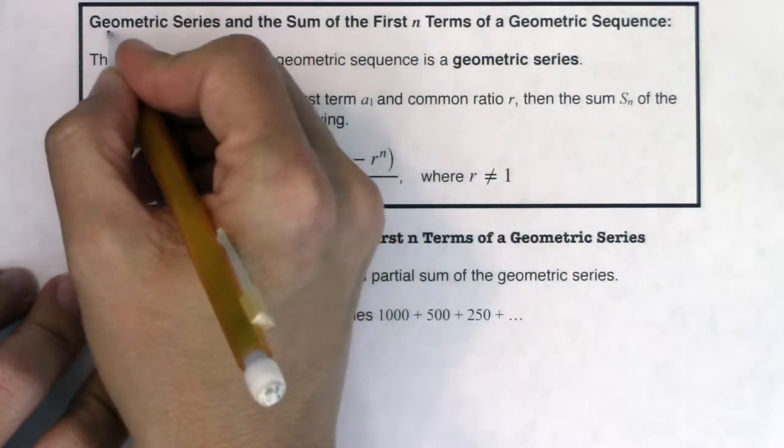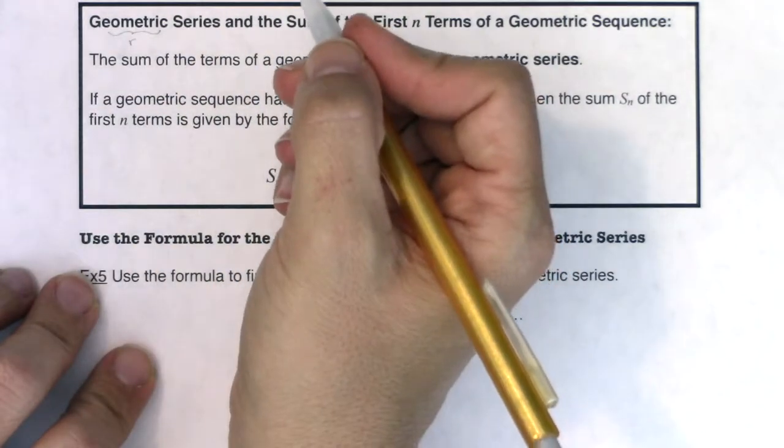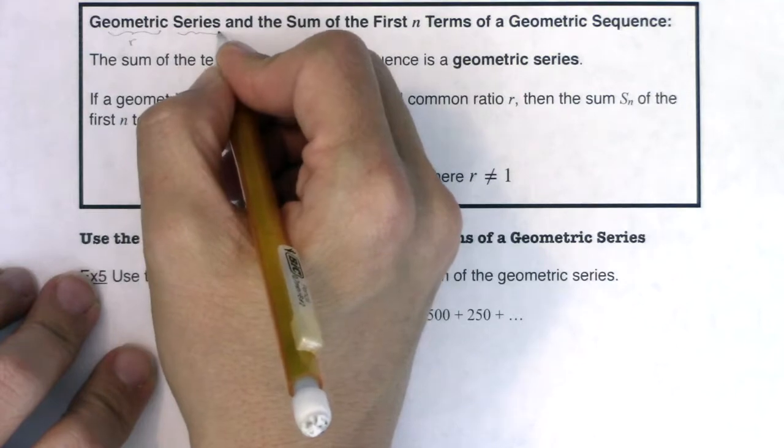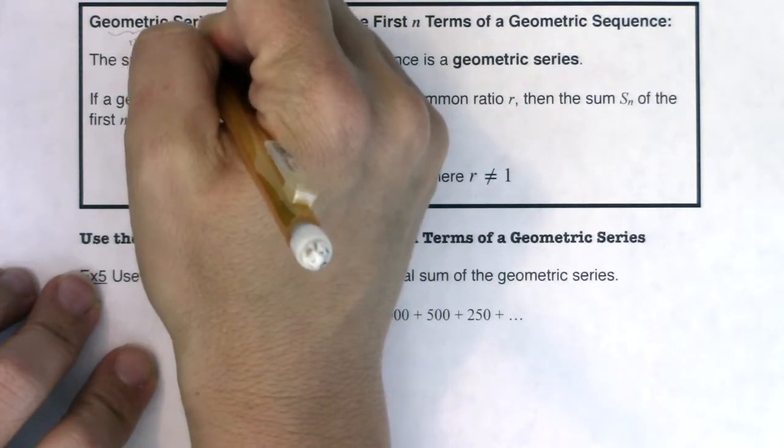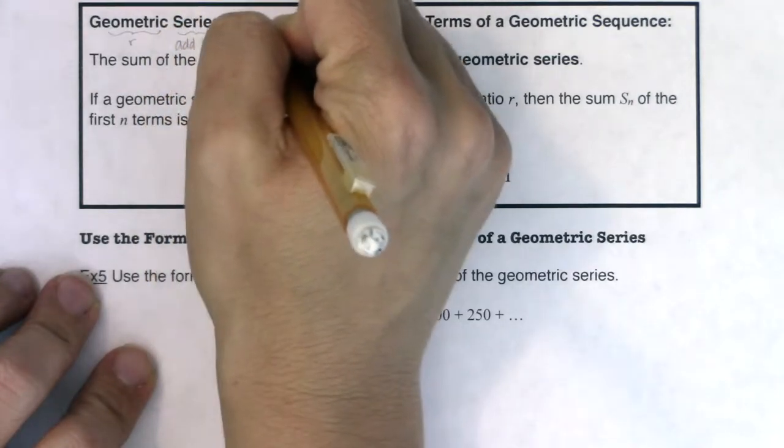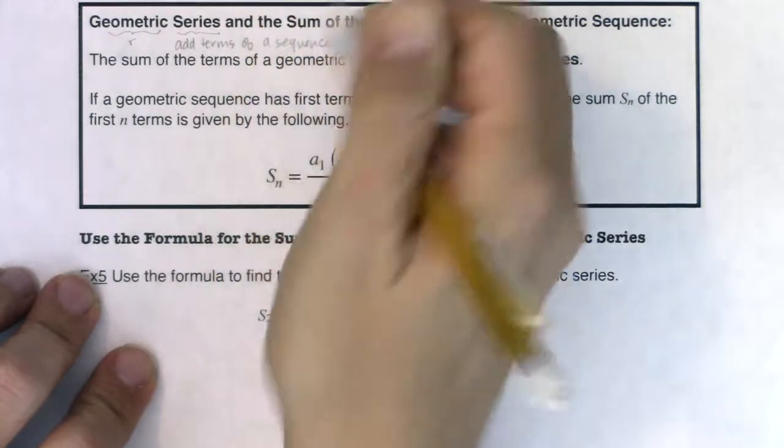Now whenever you hear geometric, we remember back to section 9.3, we're going to talk about r. When we hear series, we're going to add the terms of a sequence.